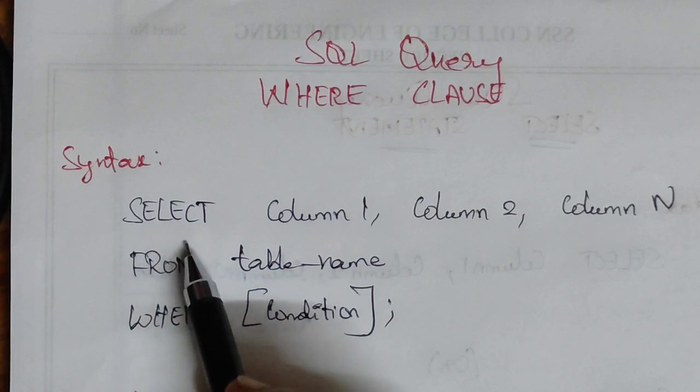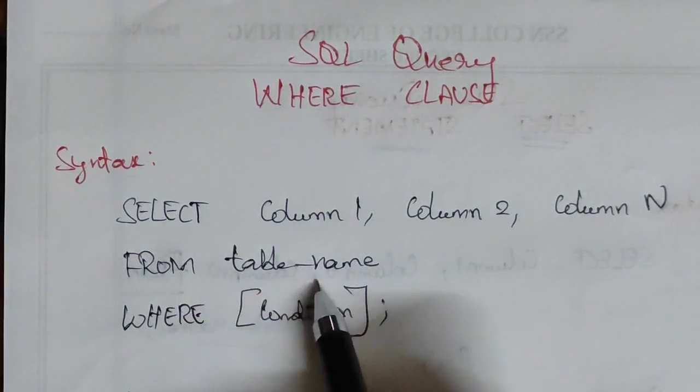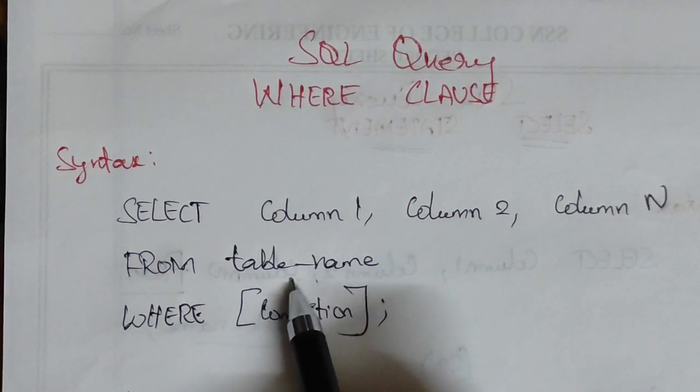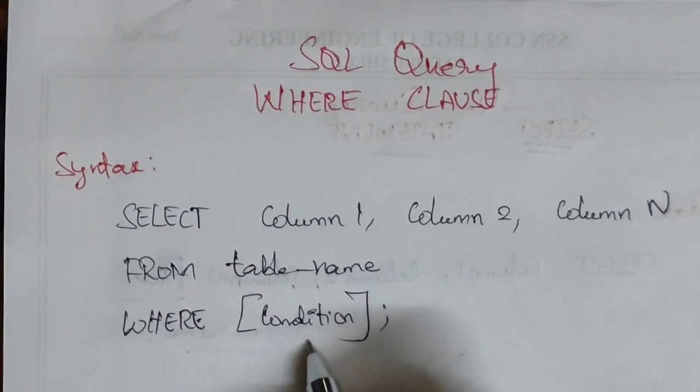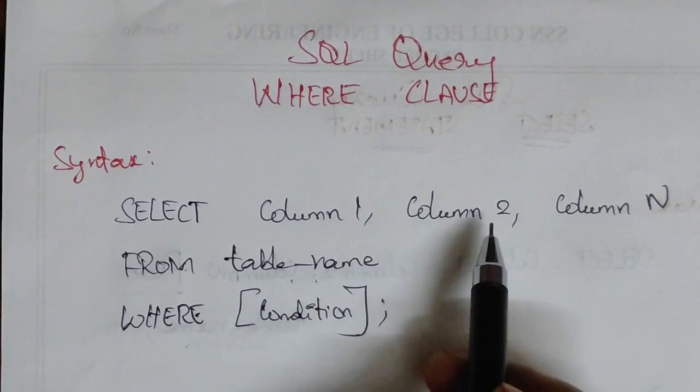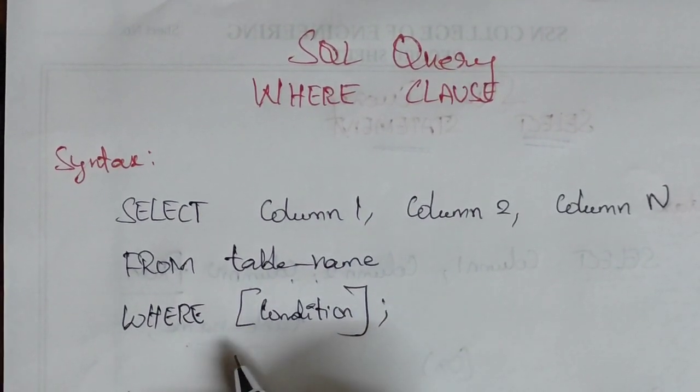The SELECT statement syntax is: SELECT column 1, column 2, column N FROM table_name. This is the same syntax we saw before. Now we'll add an extra WHERE condition to this.